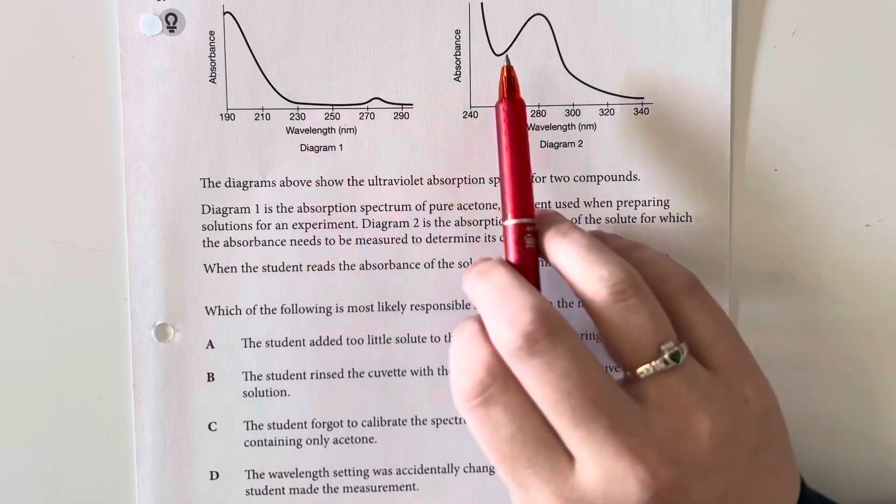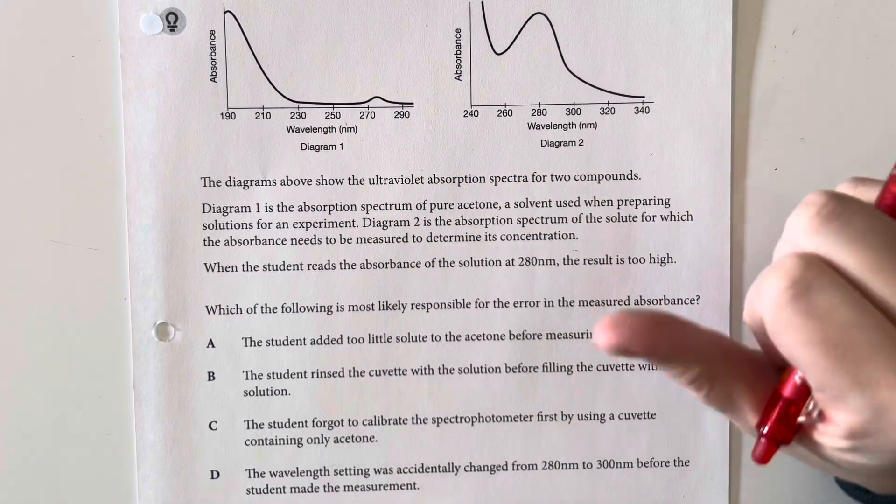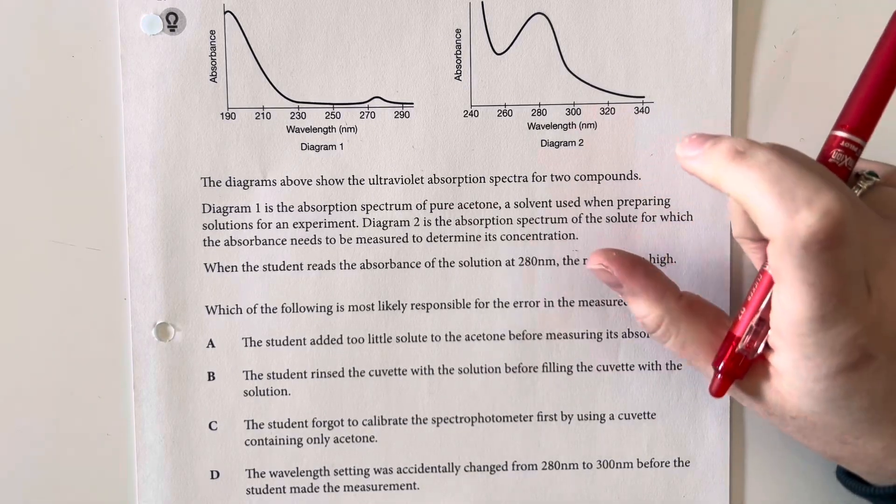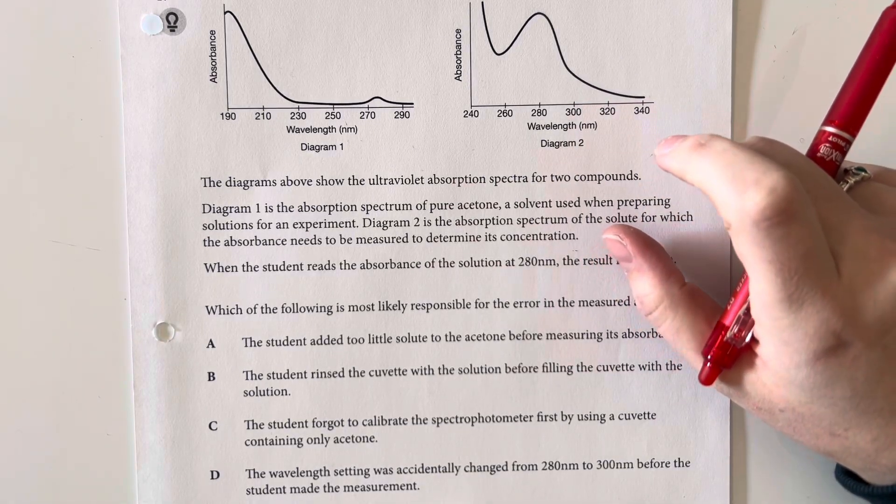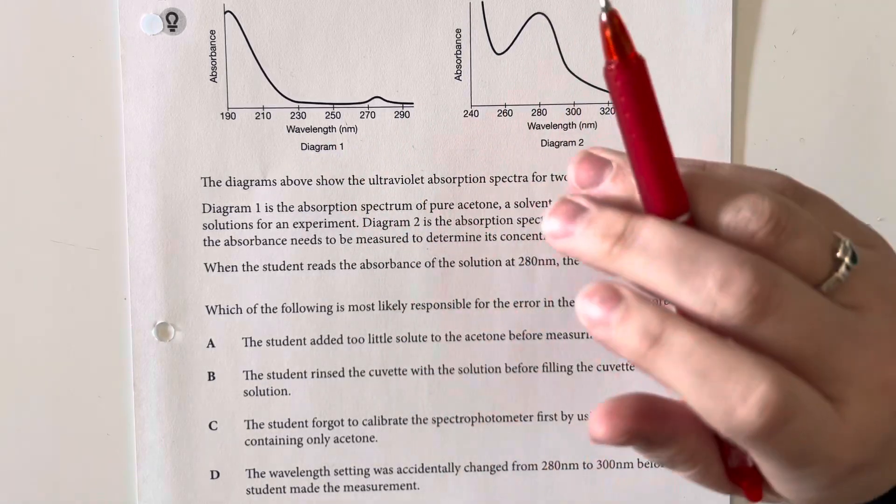So these two things should match, but they don't. So we are looking for something that is either wrong with the acetone - it is not pure acetone like it should be - or there is something wrong with the measurement system like we forgot to calibrate.